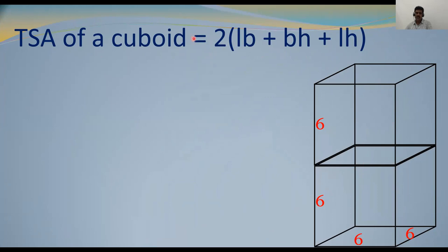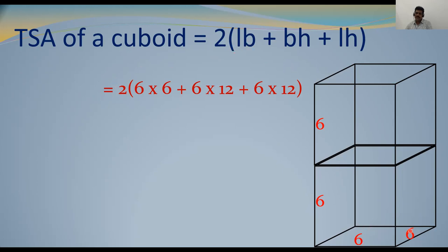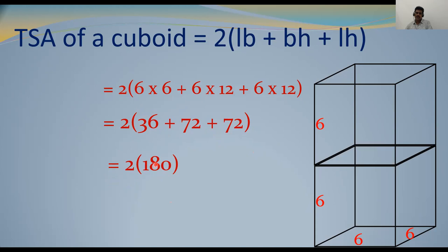Let us substitute these values in the formula. Total surface area = 2(L×B + B×H + L×H) = 2(6×6 + 6×12 + 6×12) = 2(36 + 72 + 72) = 2 × 180 = 360 square centimeters.